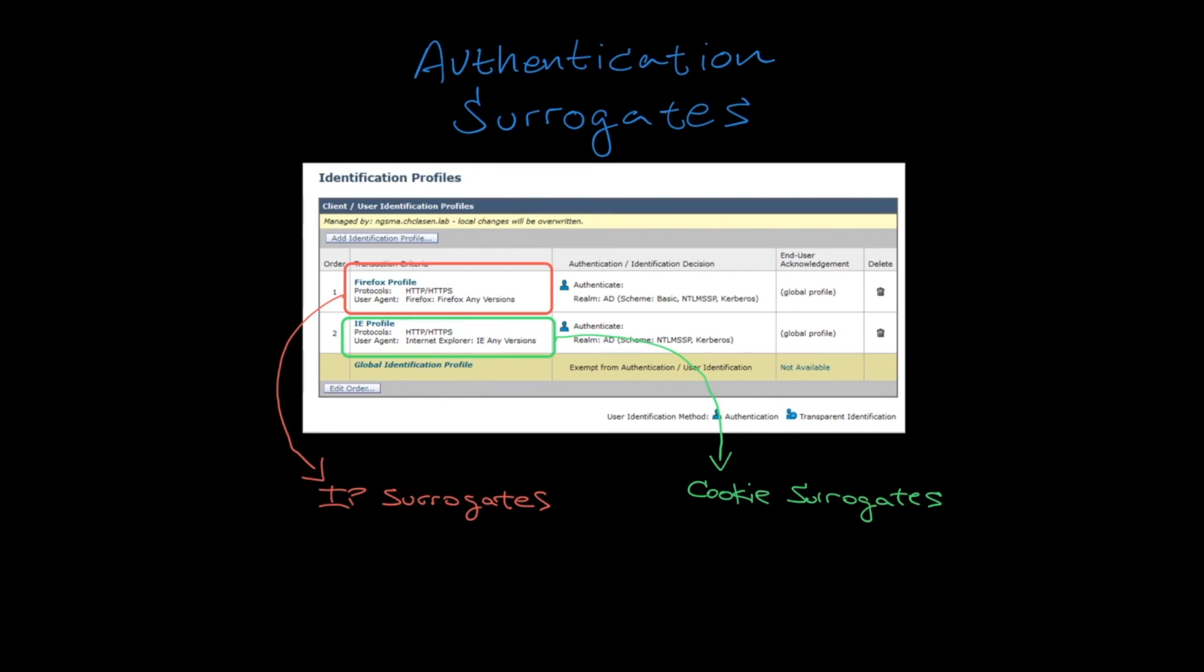This is sometimes confusing for customers, but it's completely by design. Therefore, we do not suggest mixing IP address and cookie surrogates in different ID policies.